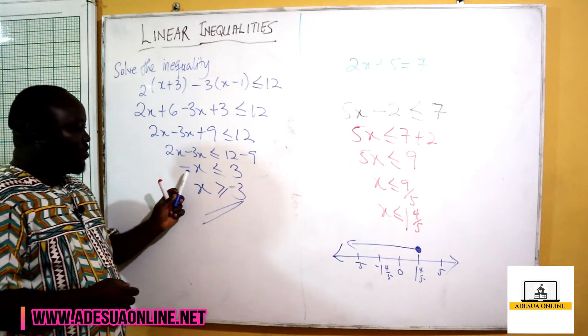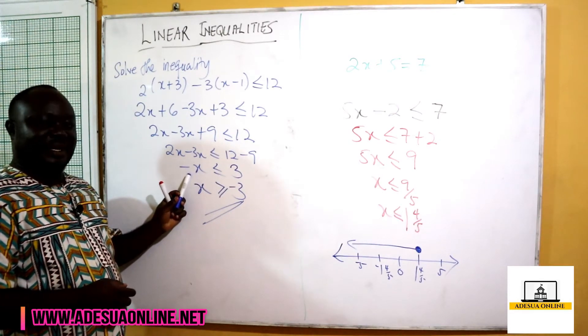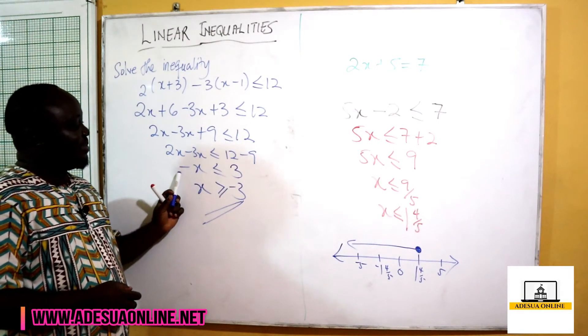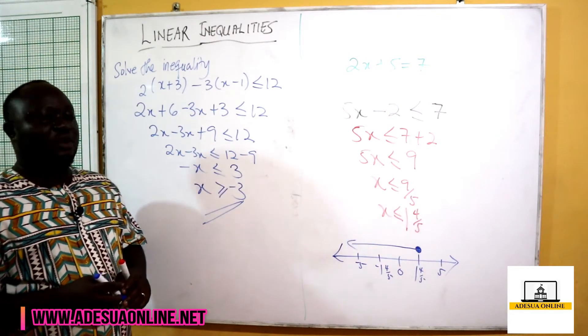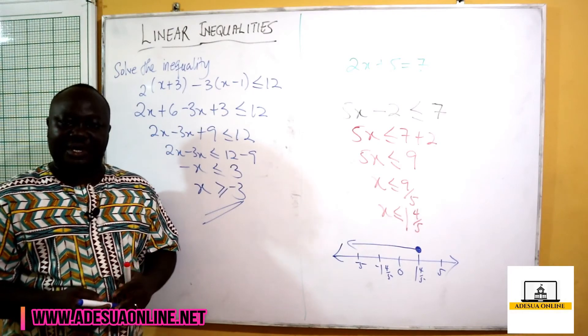We change the symbol when we had our negative number here. We multiply by negative 1 and then we change the symbol. With this, we are going to look at some more examples.